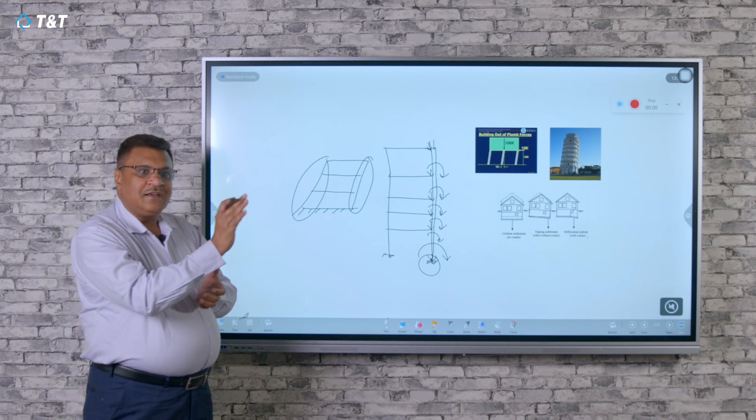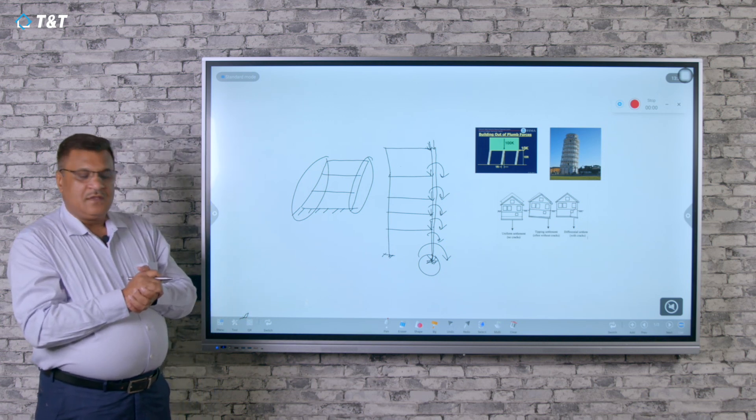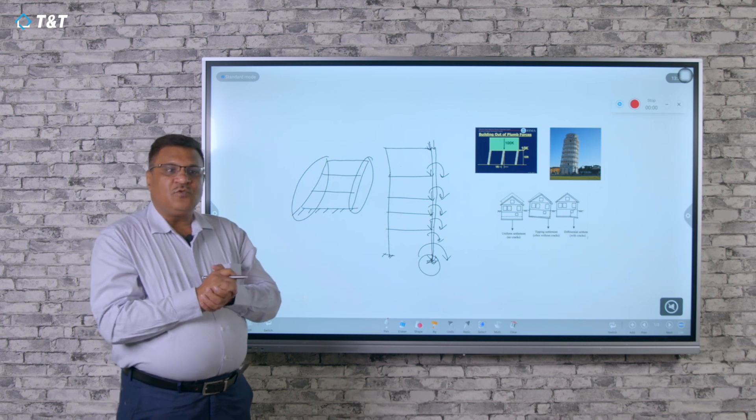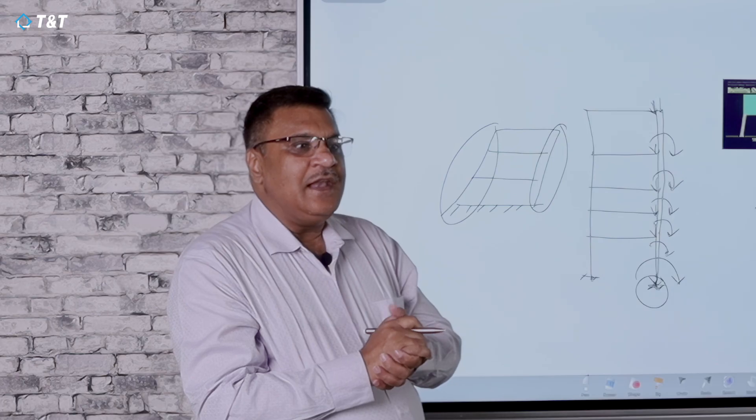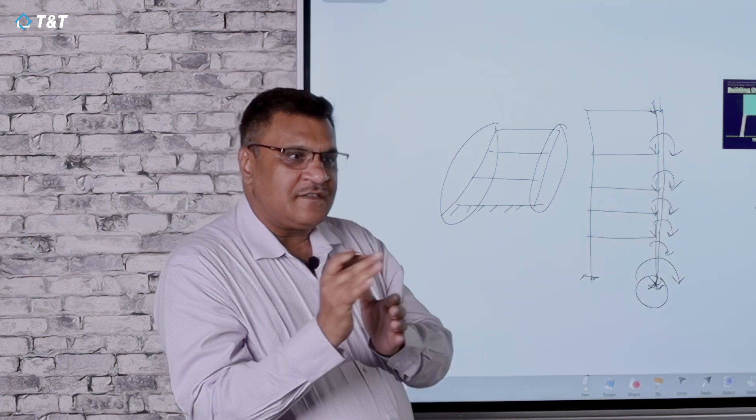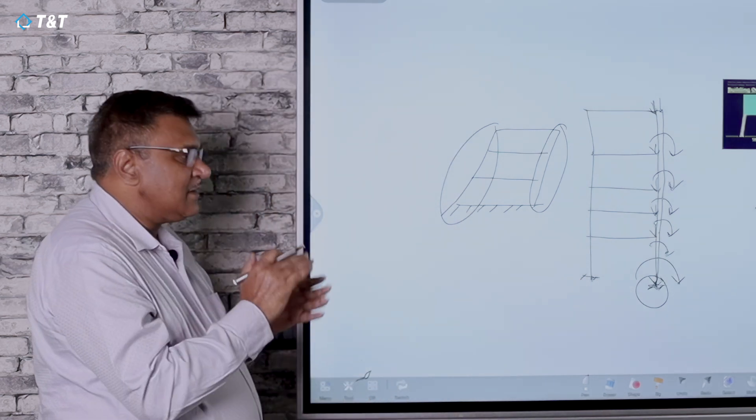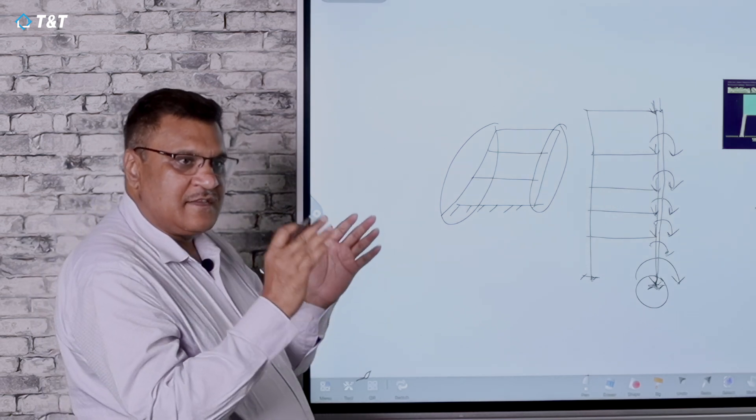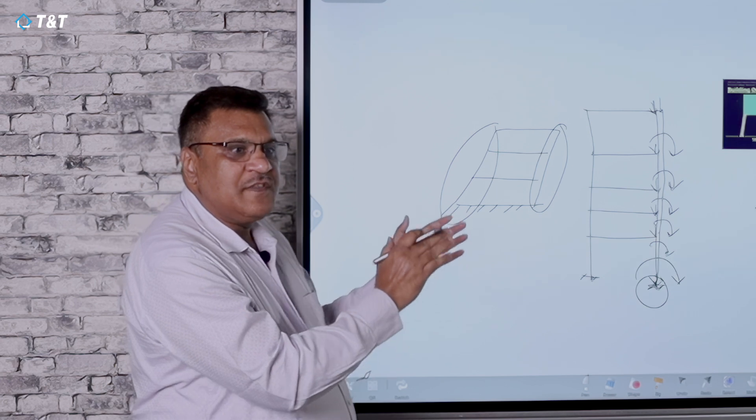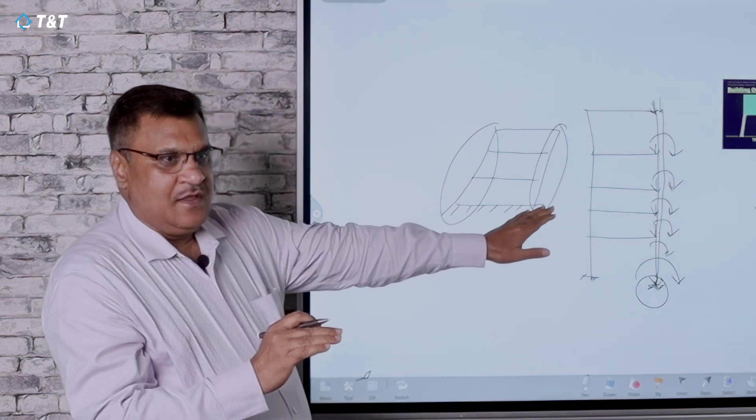It may have certain non-verticality, but that non-verticality has to be zero ideally and as least as possible practically, which can be sustained by the structure. That's why in construction, codes also keep certain tolerance limits, and for those tolerances we design for accidental eccentricity.